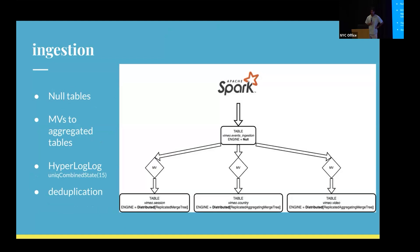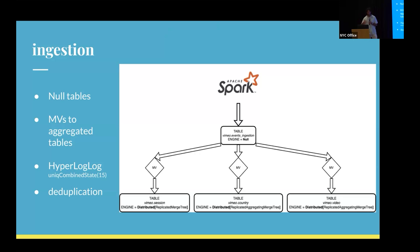For ingestion, we use Apache Spark with structured streaming, which allows exactly-once processing. With exactly-once processing, we insert into a null table. A null table in ClickHouse doesn't store any data or parts — we use it just to trigger materialized views, which then ingest to the distributed table. So essentially we move the distribution logic out of Spark into ClickHouse. We also use configurations like insert_deduplicate=1 and deduplication windows to control how many blocks are stored in ZooKeeper for deduplication. Because we use Replicated and Aggregated MergeTree, any duplication can mess up the analytics.